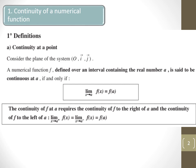The continuity at a requires the continuity of f to the right of a and to the left of a. In other words, the limit of the function when x tends to a-plus should equal the limit when x tends to a-minus, and both should also equal f of a.